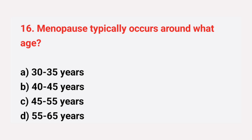Question number 16: Menopause typically occurs around what age? The right answer is option C, 45 up to 55 years.